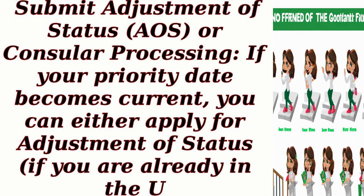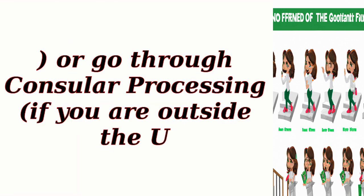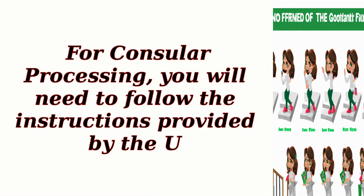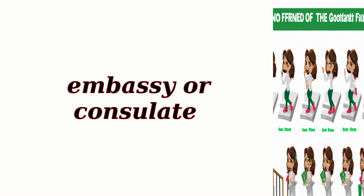Step 6: Submit Adjustment of Status (AOS) or Consular Processing. If your priority date becomes current, you can either apply for Adjustment of Status if you are already in the U.S., or go through Consular Processing if you are outside the U.S. For Adjustment of Status, you will need to file Form I-485, Application to Register Permanent Residence or Adjust Status, along with supporting documents. For Consular Processing, you will need to follow the instructions provided by the U.S. Embassy or Consulate.